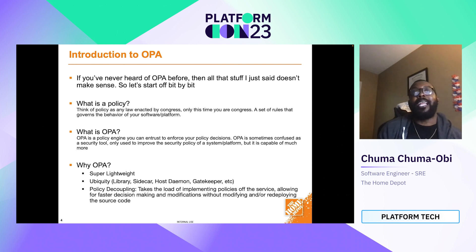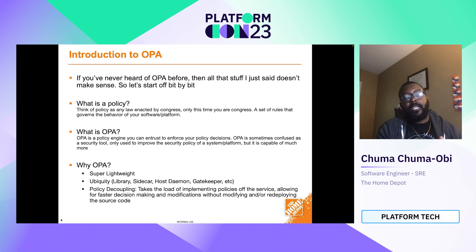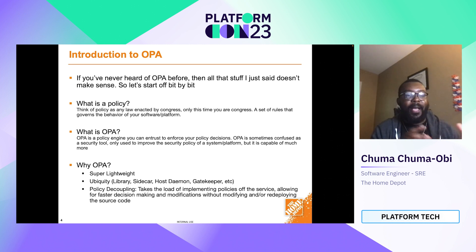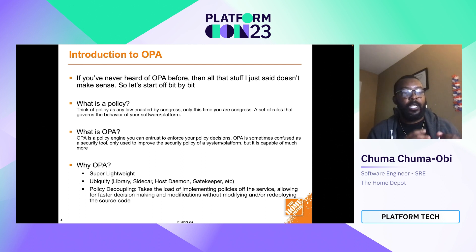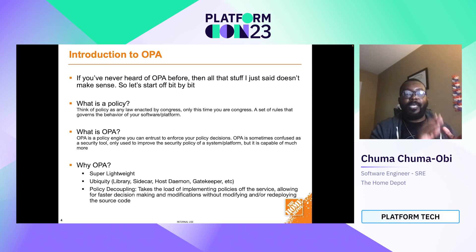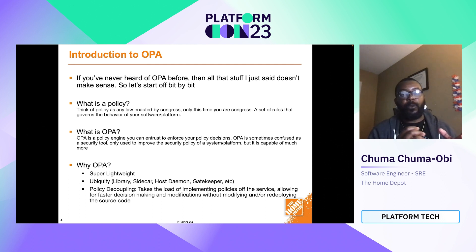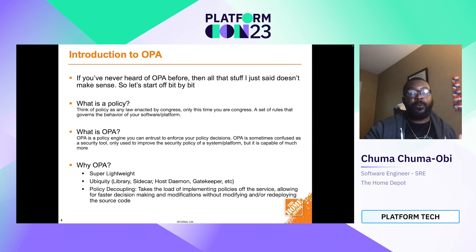Policy decoupling is another key reason. OPA allows you to take the load of implementing policies off the service or software and lets you ship things faster. Think of when you have a JSON payload your app has to vet — any introduction of new attributes would mean re-modifying and re-deploying your code. If you move that decision-making up to OPA, your code stands. It becomes a layer of gates before your platform or service is introduced to that data, taking care of policy decisions without having to modify and re-deploy source code.